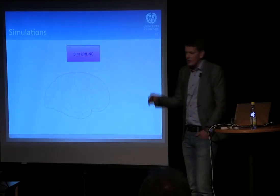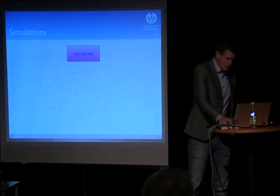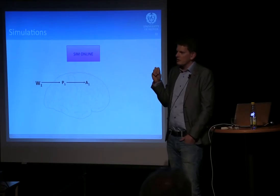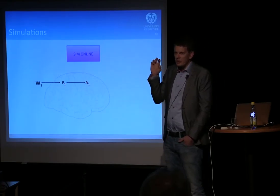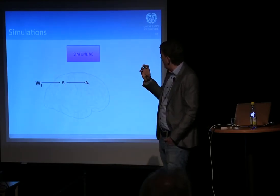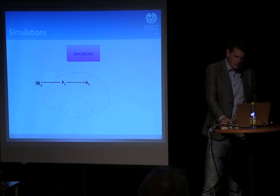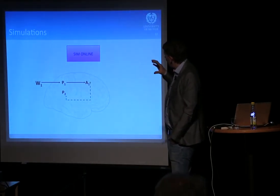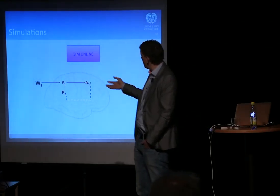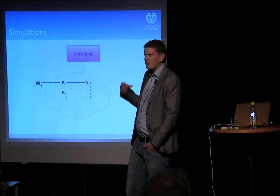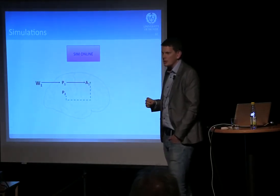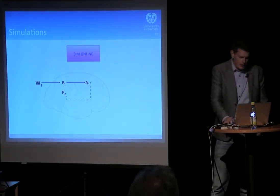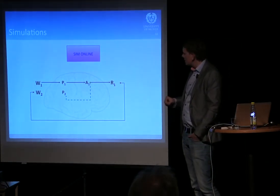If we look at what happens in what I call an online simulating brain, the same initial process happens first. But something special occurs when the motor structures start to get activated. The motor planning areas and preparatory action areas, when they start to get activated, send a signal to the sensory areas of the brain. They generate a perception that predicts the possible consequences of actually executing this action in the real world — a kind of perceptual prediction — and that arrives before the actual stimulus arrives.